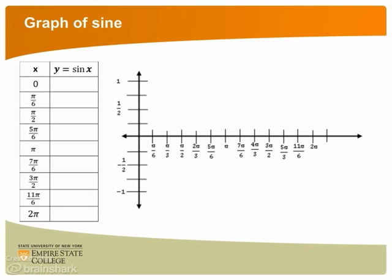Since we are graphing sine, we choose angles that have 30 degrees or π over 6 radians as their reference angle. We also include the radian measures for 0 degrees, 90 degrees, 180 degrees, 270 degrees, and 360 degrees, or 0, π over 2, π, 3π over 2, and 2π, respectively.